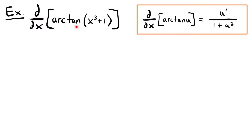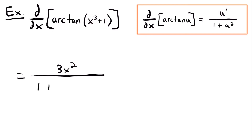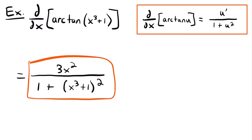Next: the derivative of arc tangent of x cubed plus 1. The derivative rule for arctan(u) is u prime divided by 1 plus u squared, where u equals x cubed plus 1. Using the power rule, u prime equals 3x squared (the derivative of 1 is 0). So the derivative is 3x squared divided by 1 plus (x cubed plus 1) squared. No further simplification is needed — that is the final answer.